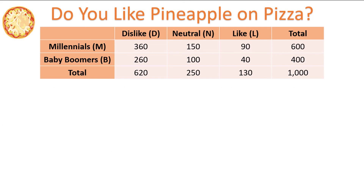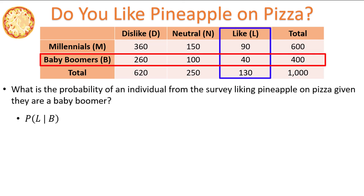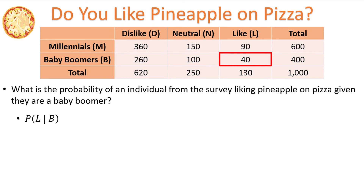We can also ask conditional probabilities from a contingency table. For example, what is the probability of an individual from the survey liking pineapple on pizza given that they are a Baby Boomer? This translates into the probability of L given B. We find this by first finding the intersection of L and B — the number of Baby Boomers who like pineapple on pizza, which is 40. We divide not by the grand total of 1,000, but by the total number of Baby Boomers since our event is conditioned on Baby Boomers. Since there were 400 Baby Boomers surveyed, we divide 40 by 400, giving us 0.1. The biggest mistake students make on conditional probabilities using contingency tables is dividing by the grand total instead of the total for the conditioned event, so make sure to not make that mistake.